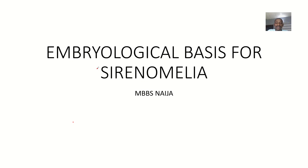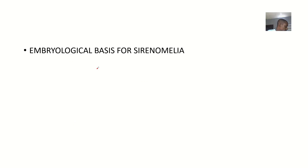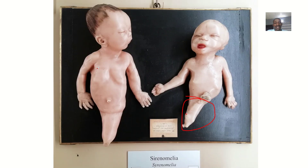We'll talk about the embryological basis for sirenomelia. Sirenomelia is a condition where the child's lower limbs are kind of fused, and the child ends up looking like a mermaid.